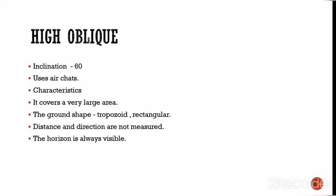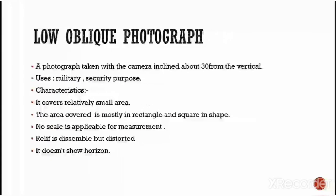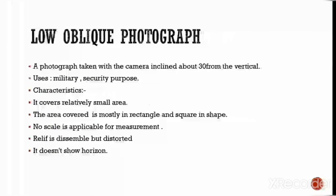The characteristics of oblique aerial photographs are: they cover a large area; the ground shape is trapezoidal and rectangular; distance and direction are not easily measured; and the horizon is always visible in high oblique photographs.